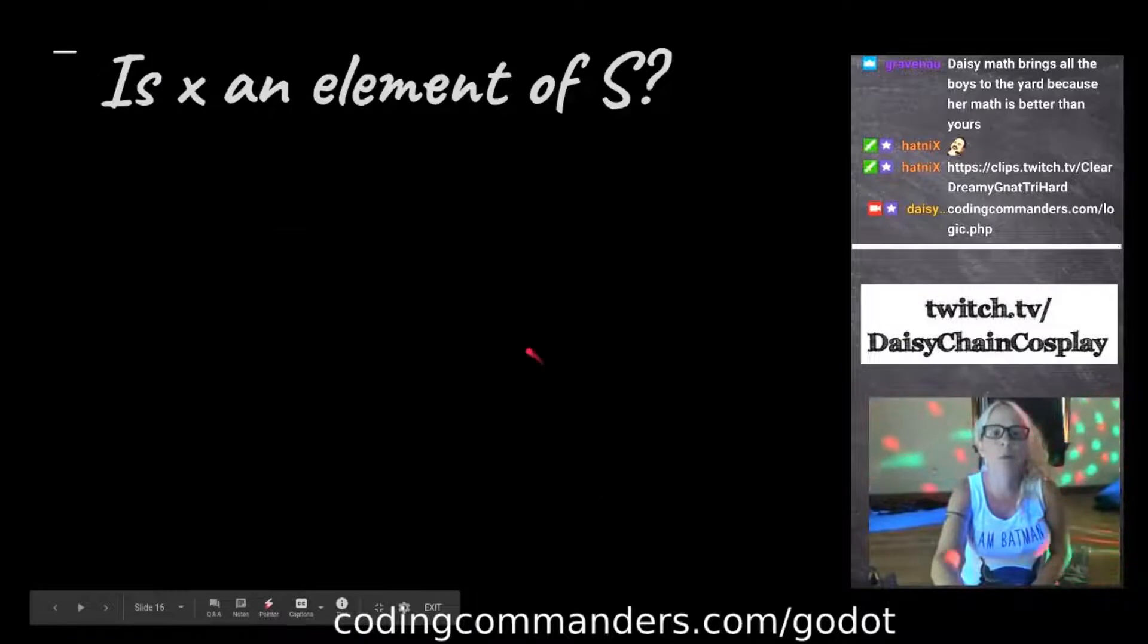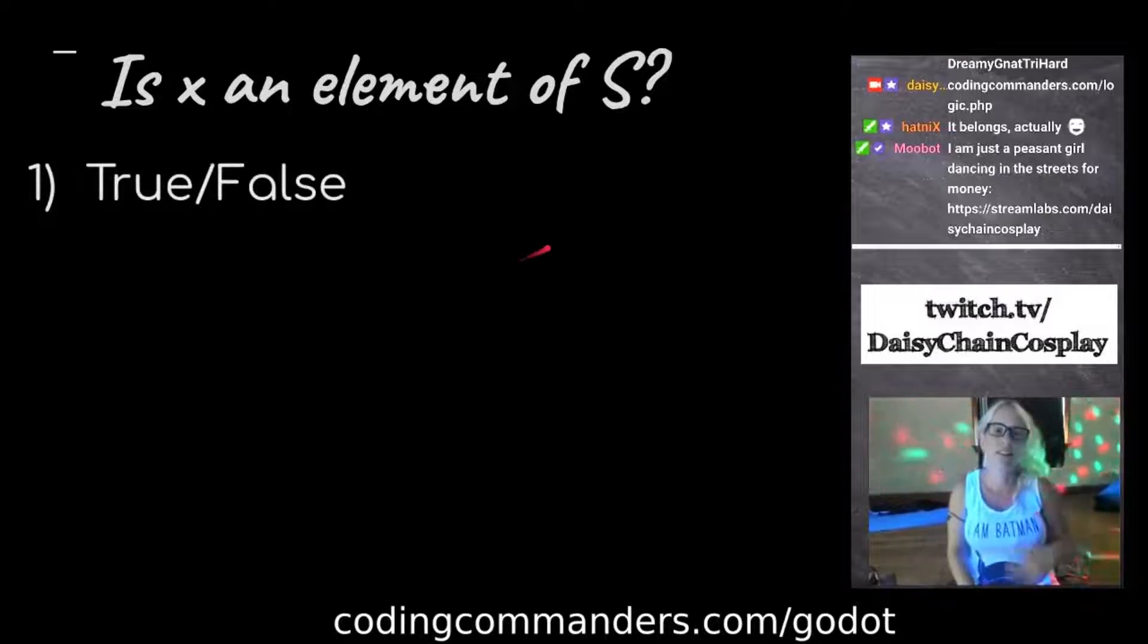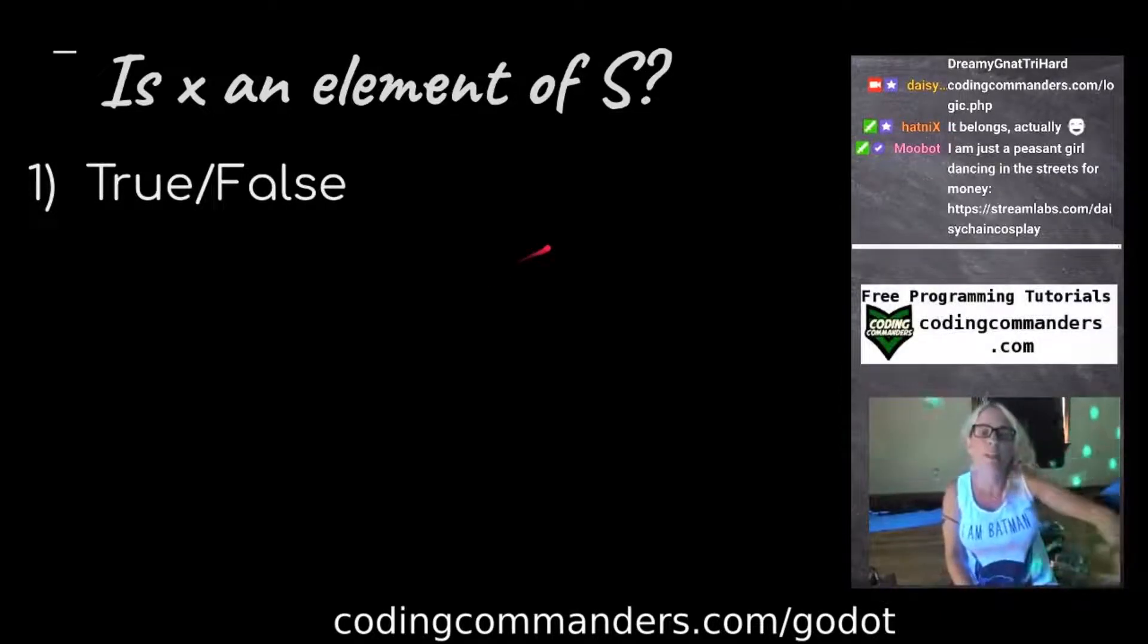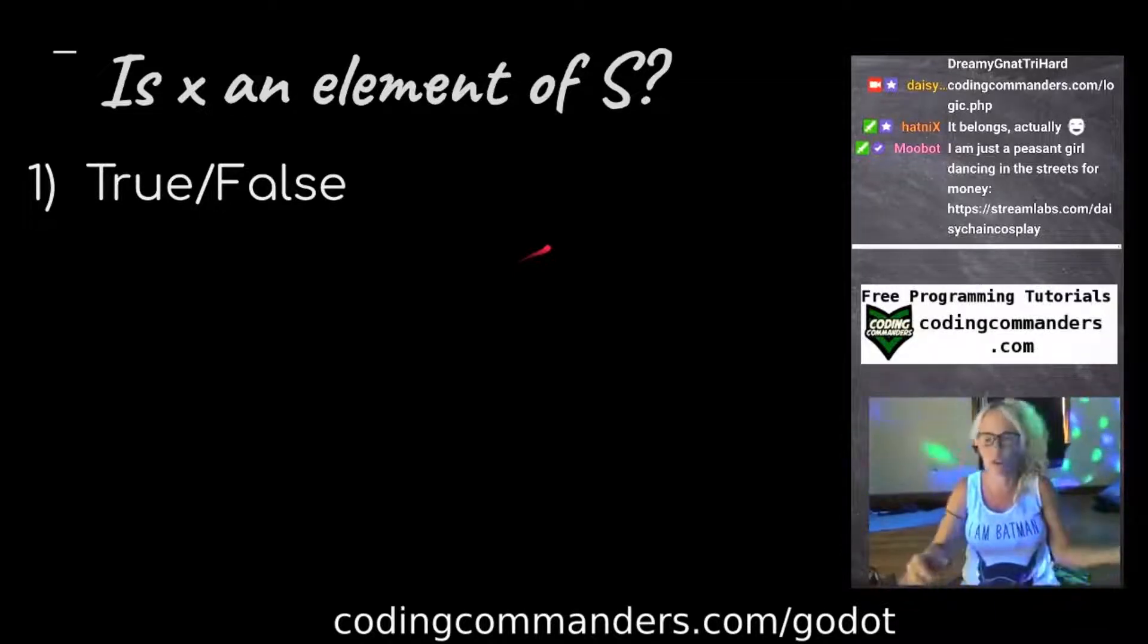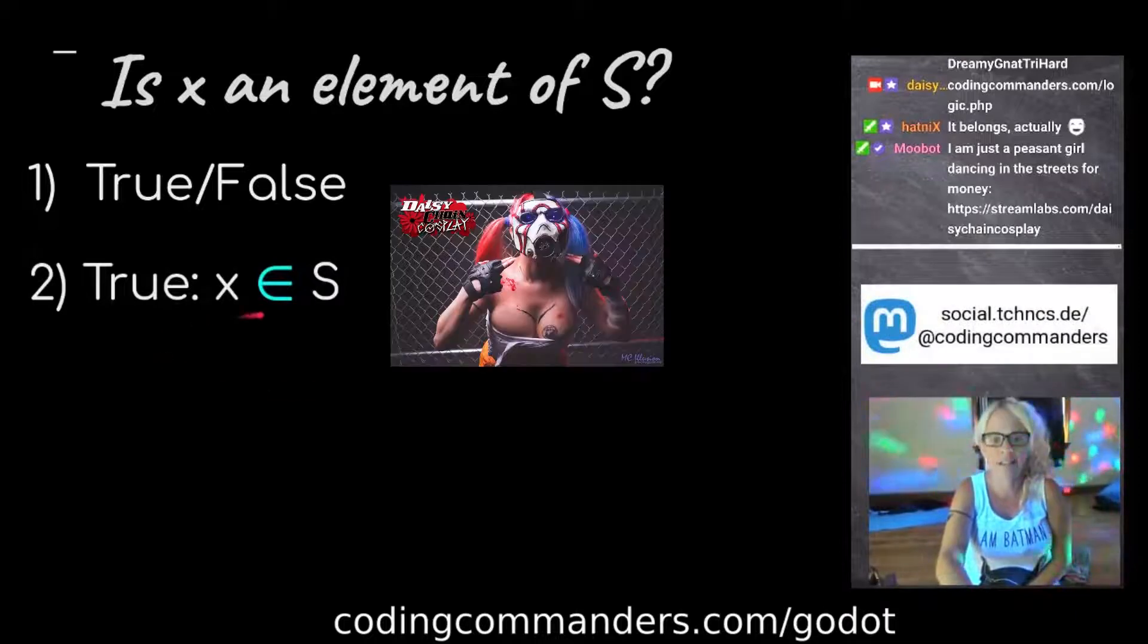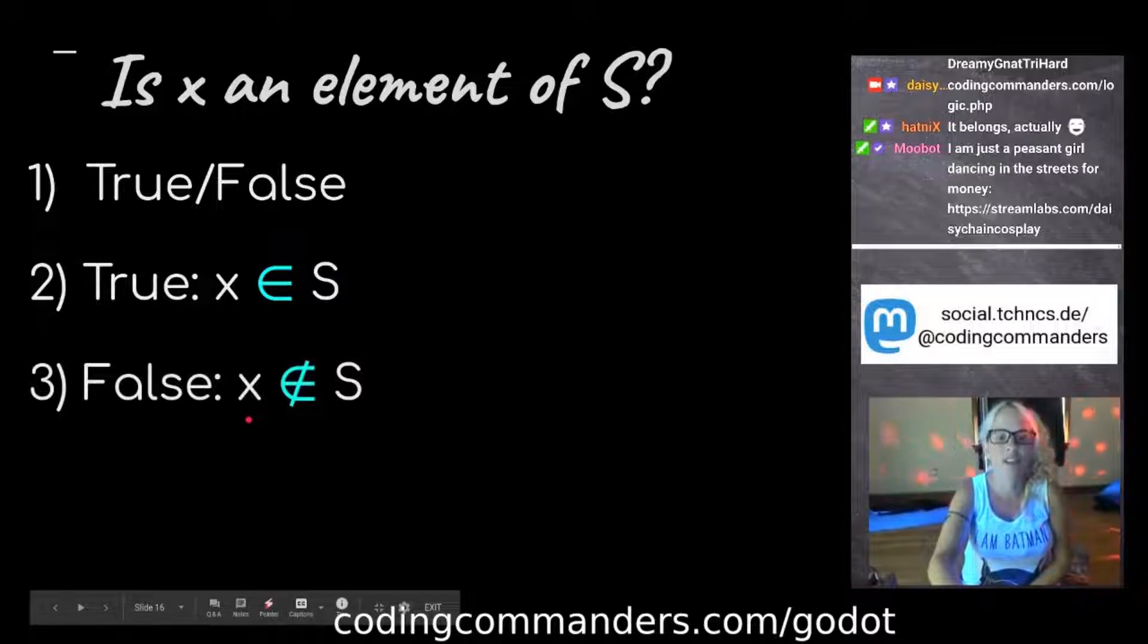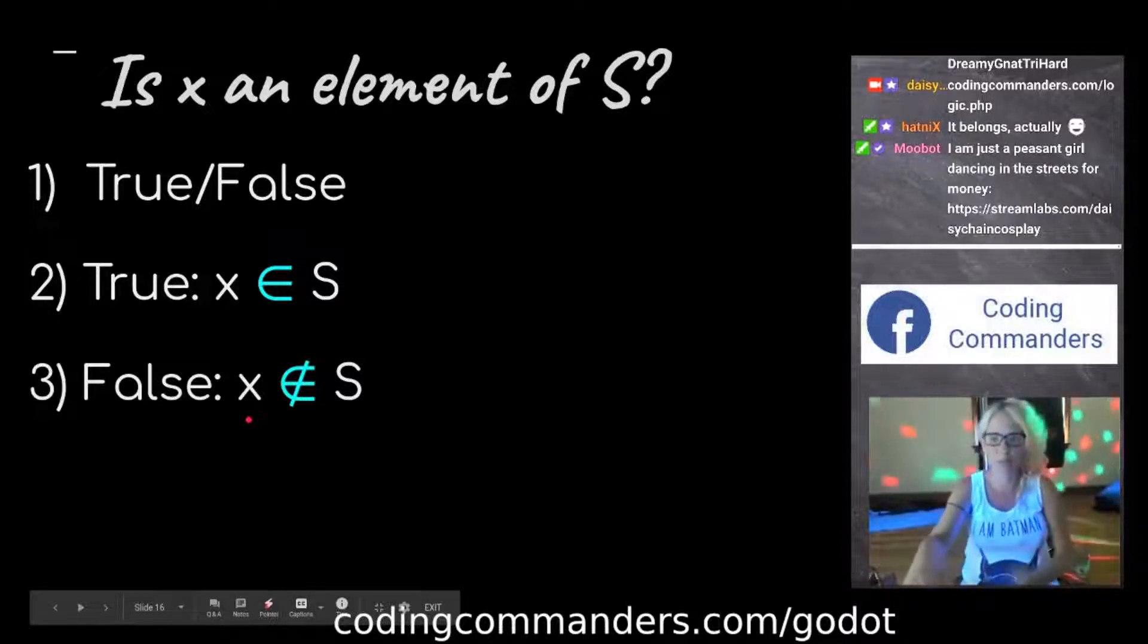Oftentimes what we want to know is, is X an element of S? This is going to be either true or false. It's either true that Borderlands 2 exists in Hatnix's game collection or it's false. If it's true, then Borderlands 2 is an element of Hatnix's video game collection. If it's false, then Borderlands 2 is not an element in Hatnix's game collection.